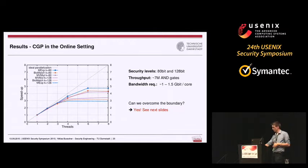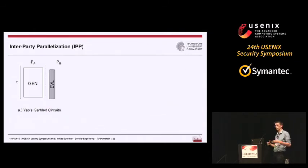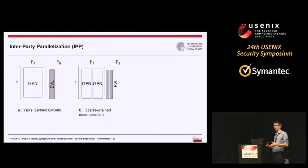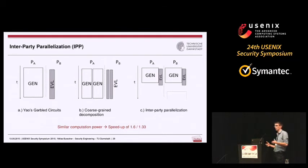We have an idea that provides benefit even with limited communication. The observation is that in Yao's protocol in its basic form, one party has to do roughly four times more work than the evaluating party. If you parallelize, this gap remains. But with multiple cores, it would be preferable to interchange work between parties — what we call inter-party parallelization (IPP) — so both parties have an equivalent amount of work. Assuming equivalent computational power, you observe a speedup of 1.6 or 1.33, depending on whether you use the half-gate approach. This is also secure in the semi-honest model.